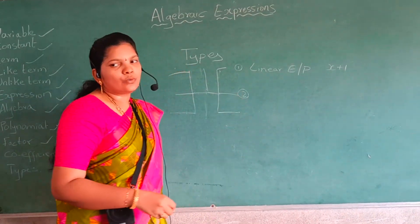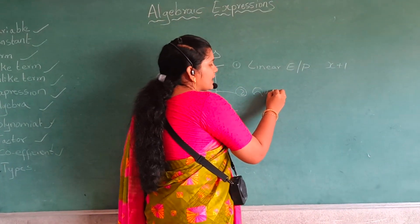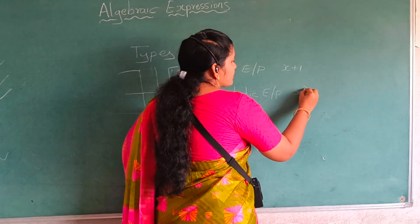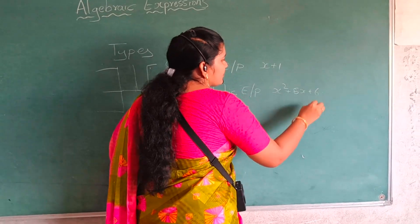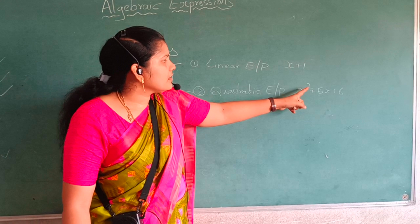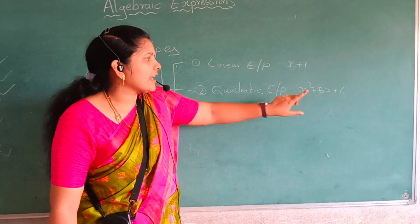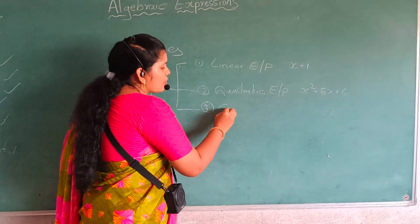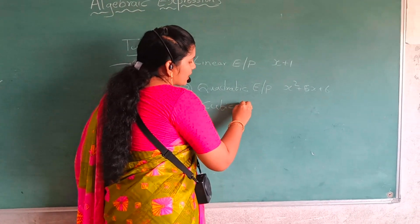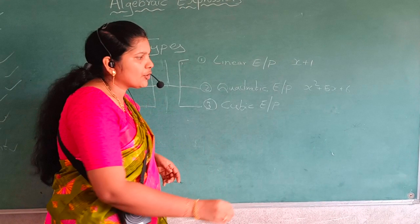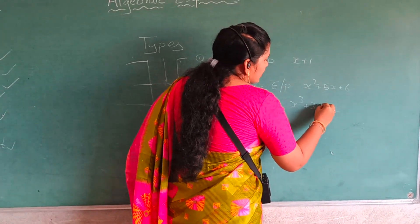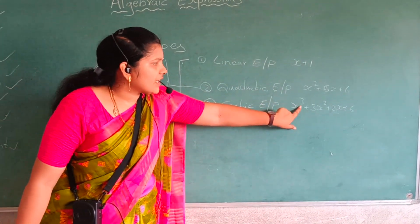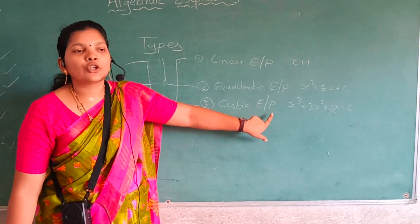In the same way, if the degree is 2, that is called a quadratic expression or quadratic polynomial. For example, x squared plus 5x plus 6 — the degree is 2, so it is a quadratic expression or quadratic polynomial. And if the degree is 3, that is called a cubic expression or cubic polynomial, for example x cubed plus 3x squared plus 2x plus 6.